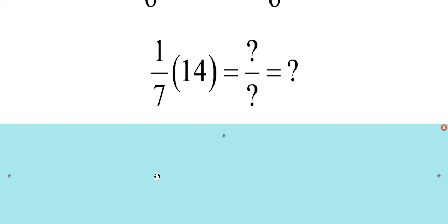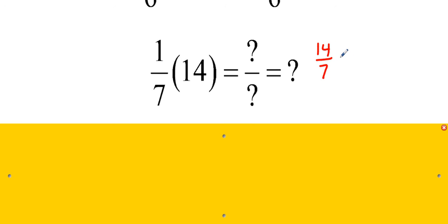1 seventh times 14 equals what? It equals 14 over 7, which equals 2.